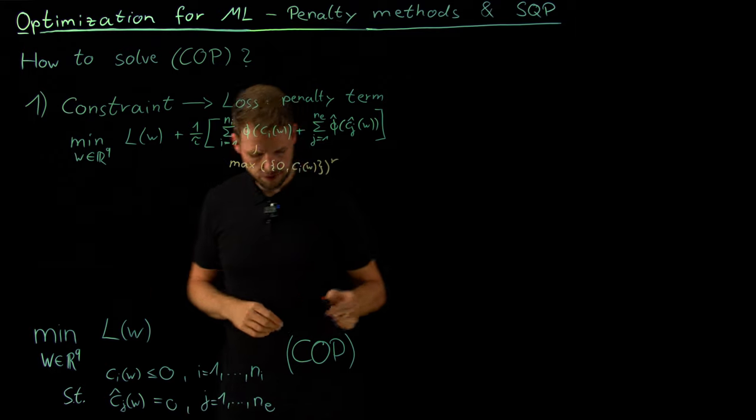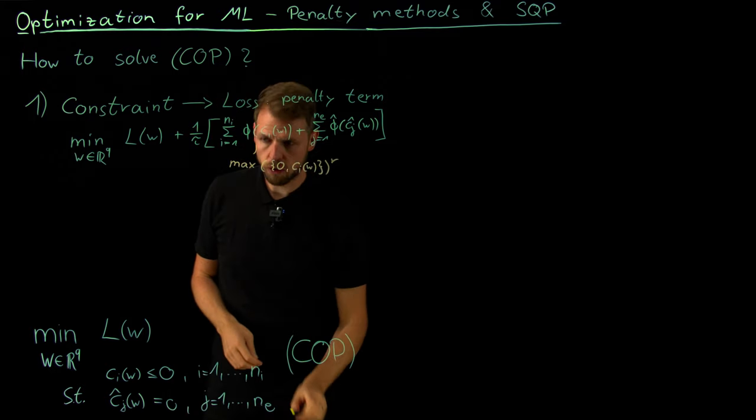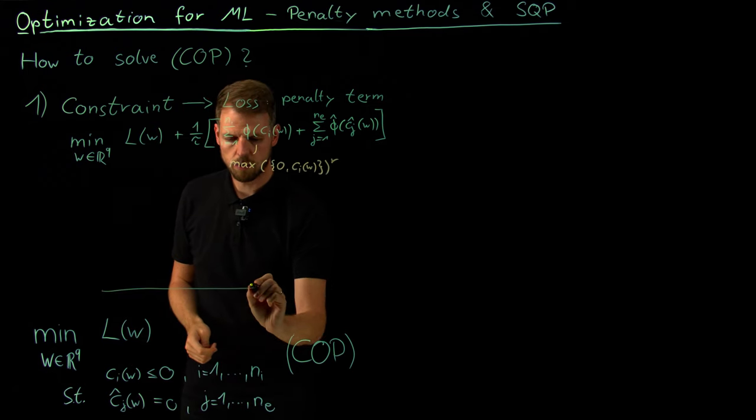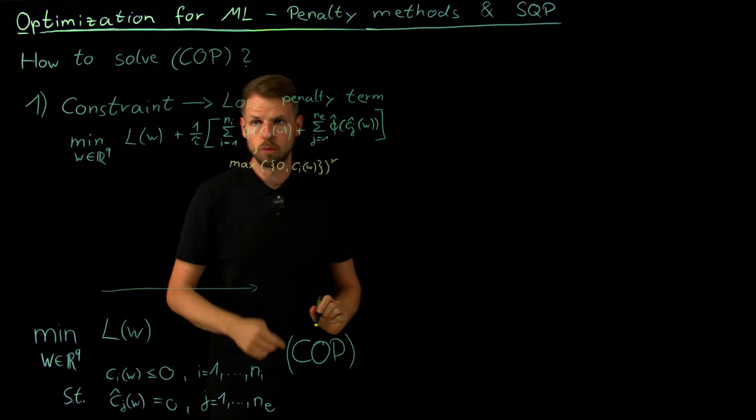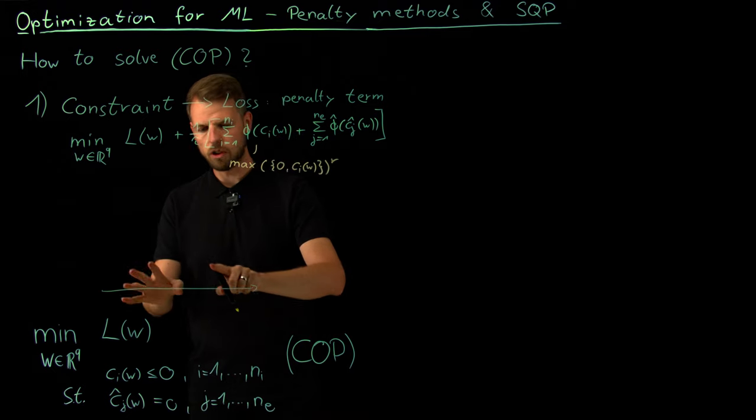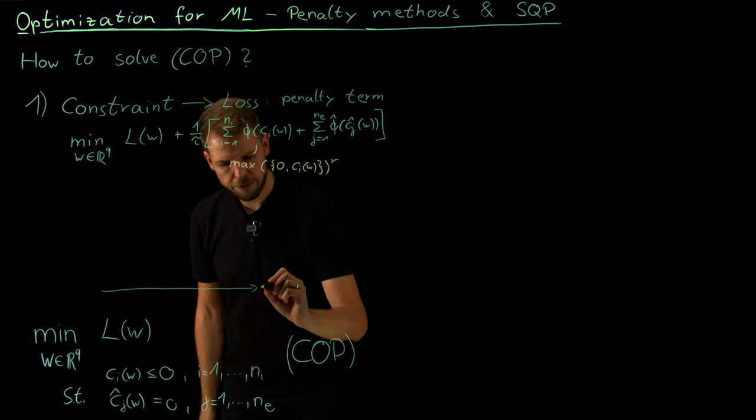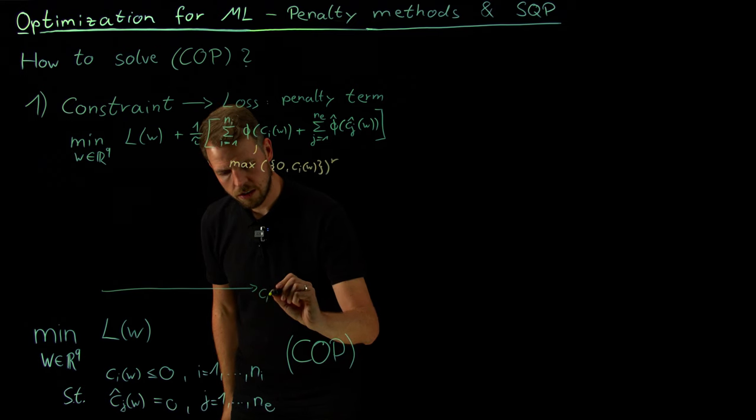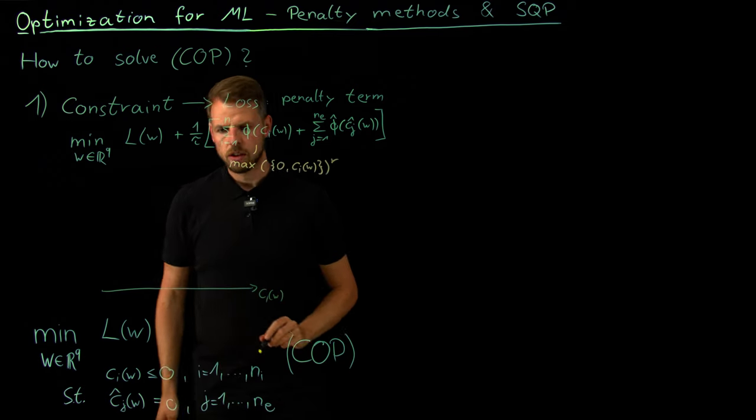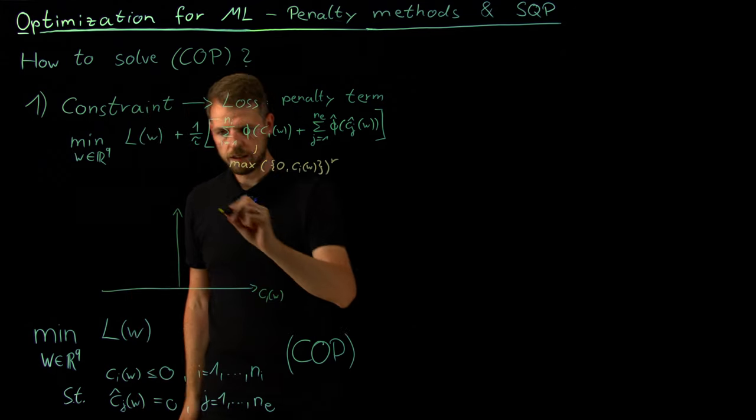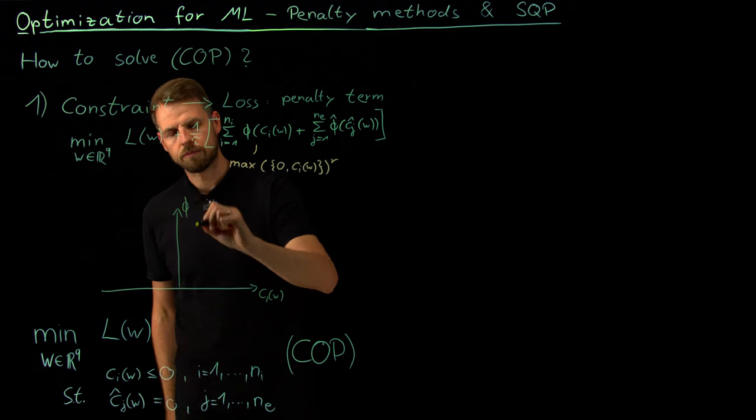So this is what we call an outer penalty. Before I get there, let's draw a small sketch to show you what this means. So let's now look at this one. And from left to right, we are asking ourselves not about the loss function or the parameter value as we did before, but about the constraint function value. So what does it mean? The zero is really important. And this is our penalty function.